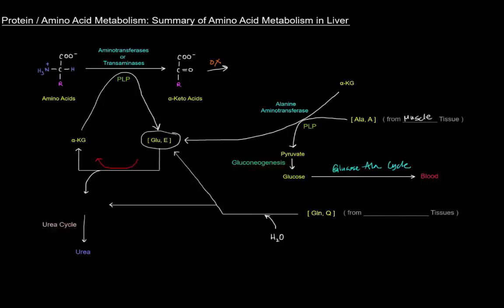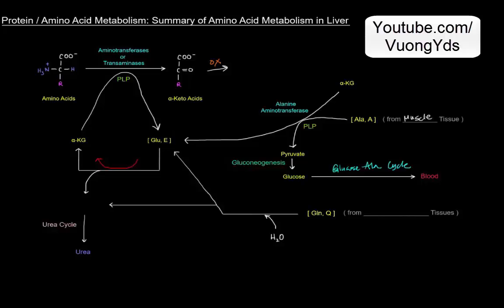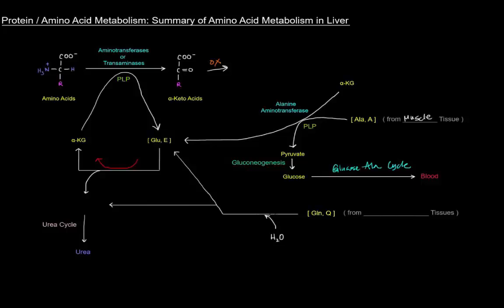We also get glutamate from hydrolyzing the amide nitrogen off of glutamine via the glutaminase reaction. That glutamine is coming from a bunch of extra-hepatic tissues — that is, tissues other than the liver. We hydrolyze off that amide nitrogen and it's freed up as ammonium, along with glutamate.